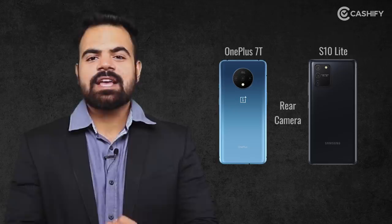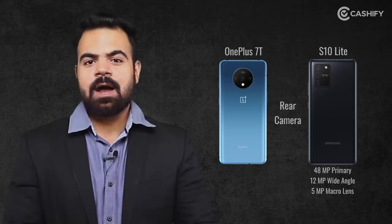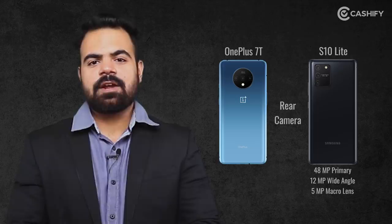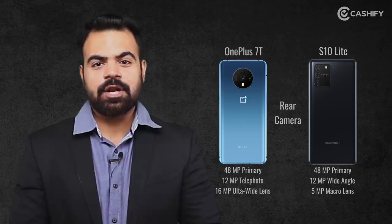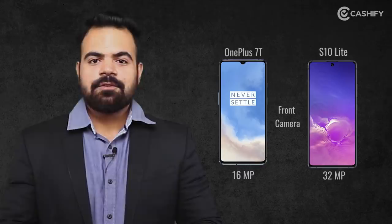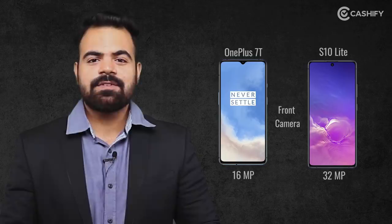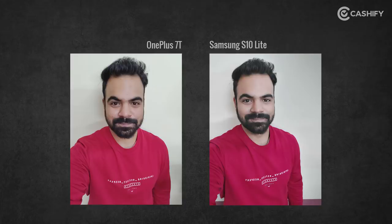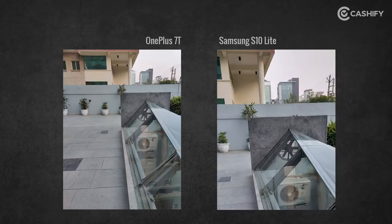Camera is a very important part when buying new phones. In the S10 Lite, you get a 48MP primary lens, 12MP wide-angle lens, and 5MP macro lens. On the OnePlus 7T, you get a 48MP primary lens, 12MP telephoto lens, and 16MP ultra-wide-angle lens. The OnePlus 7T has no dedicated macro lens, so it uses the ultra-wide-angle lens for macro photos. For the front camera, the S10 Lite gives you a 32MP camera and the OnePlus 7T gives you a 16MP camera.